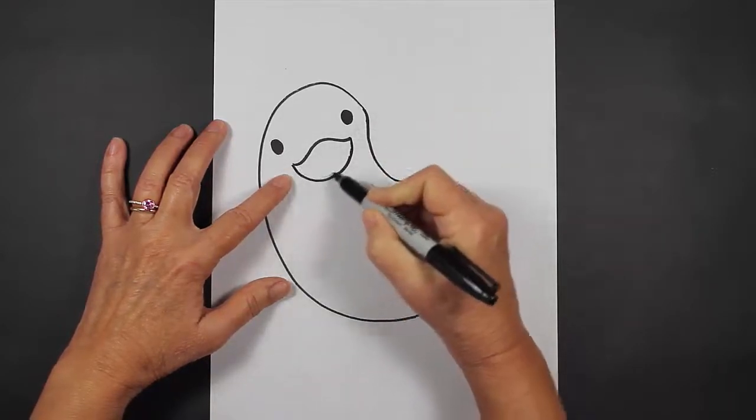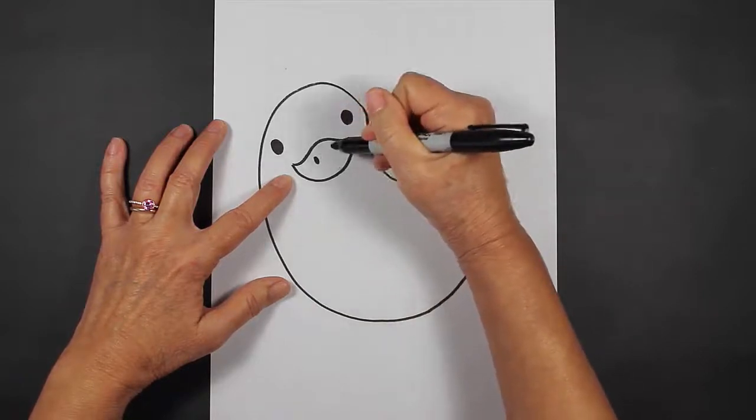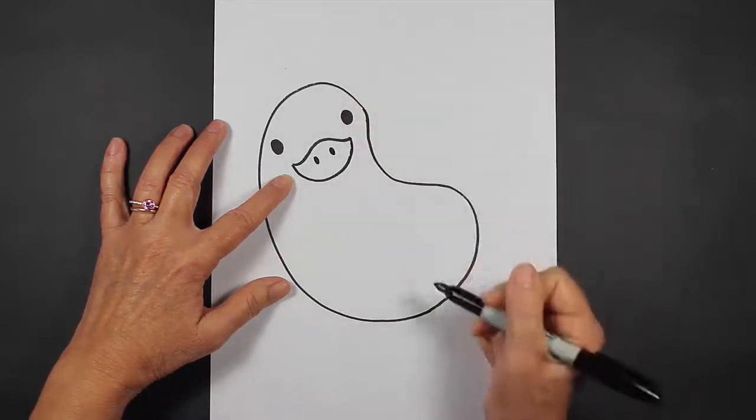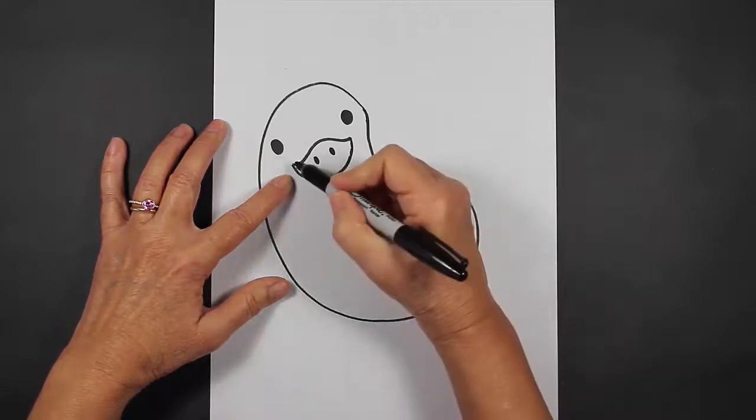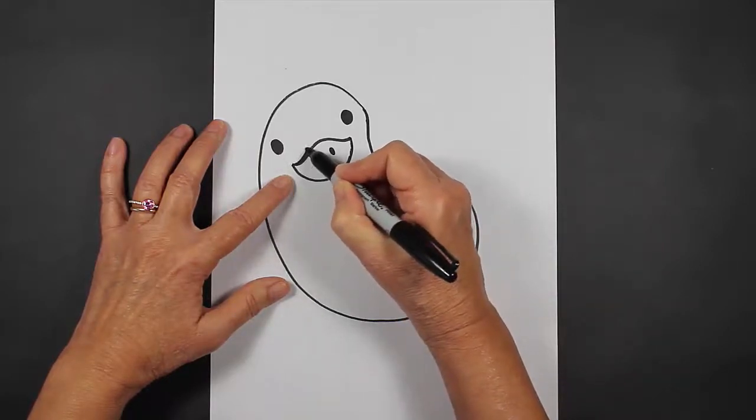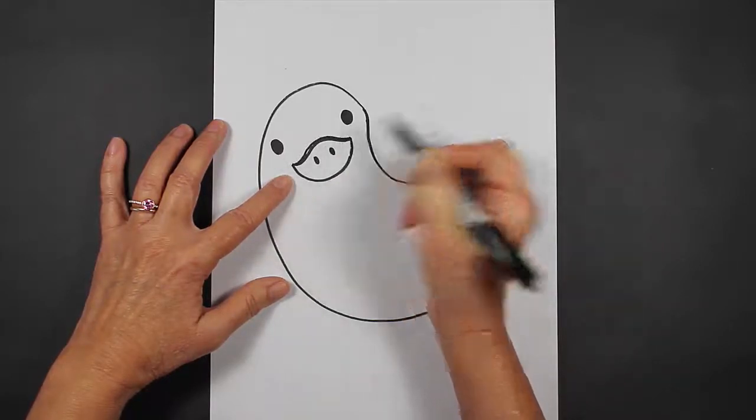And then we have a curved line coming up, and then we have two nostrils so he can breathe. I'm going to come around and make another line to double that first one up.